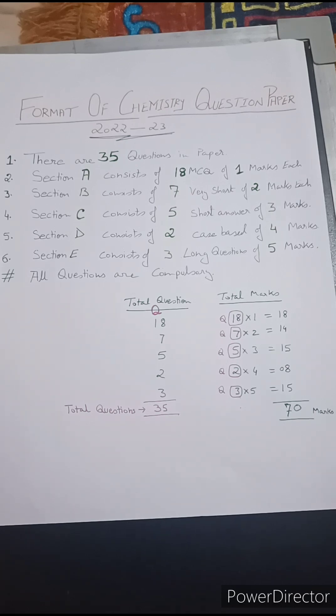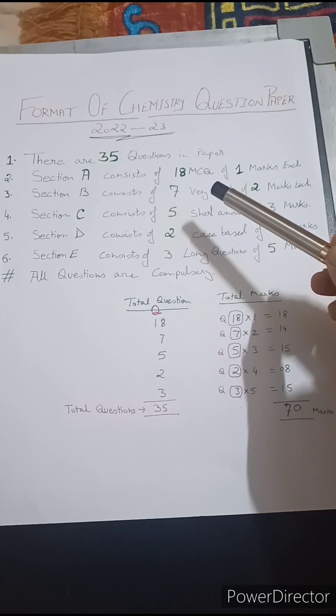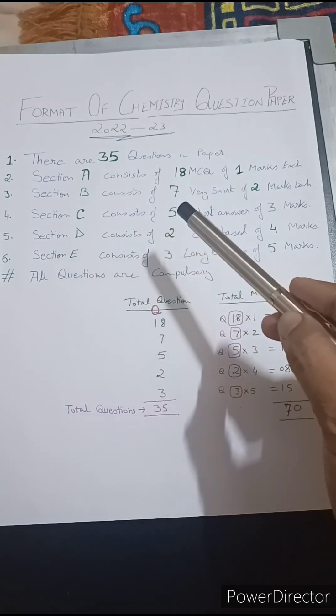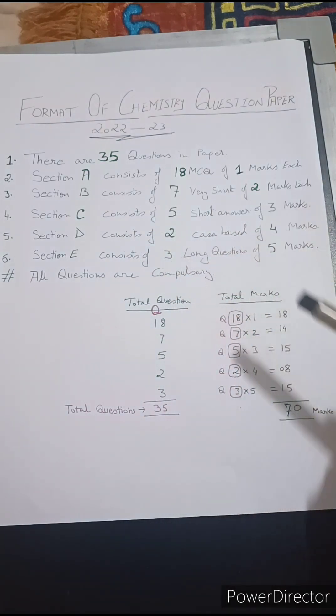So if you can see, I have very clearly mentioned in this that there are total 35 questions in the paper. Section A consisting of 18 MCQ questions which are of one mark each, that means total of 18 marks. Section B consisting of 7 very short questions of 2 marks each, resulting into total of 14 marks.